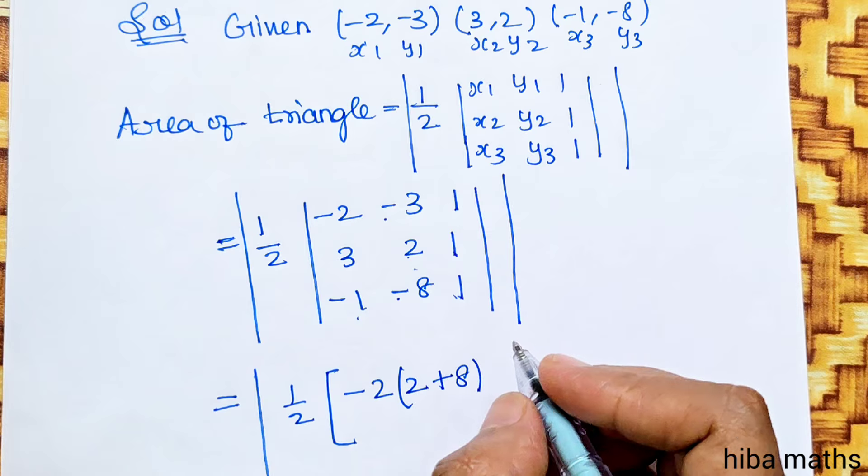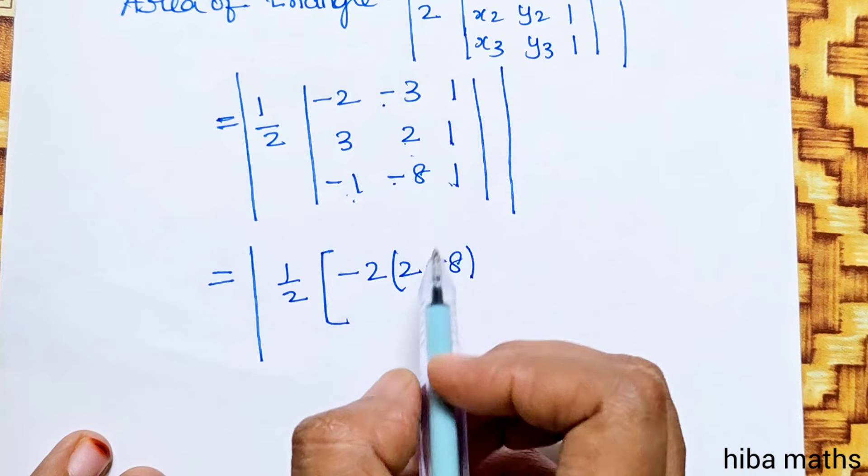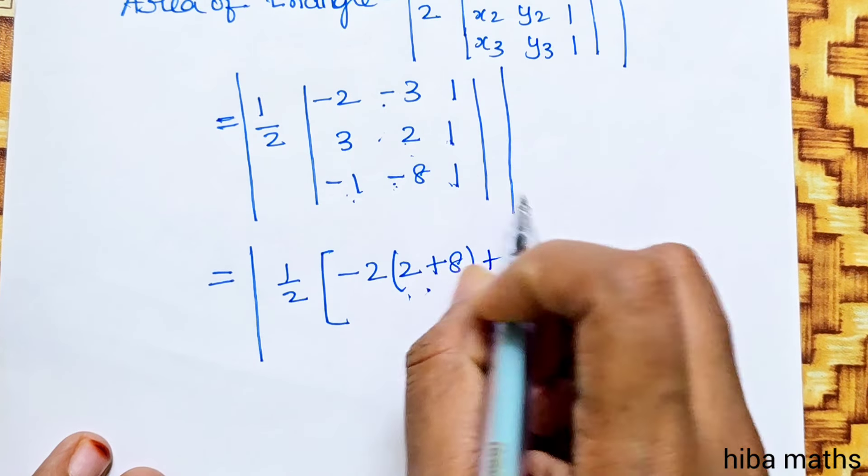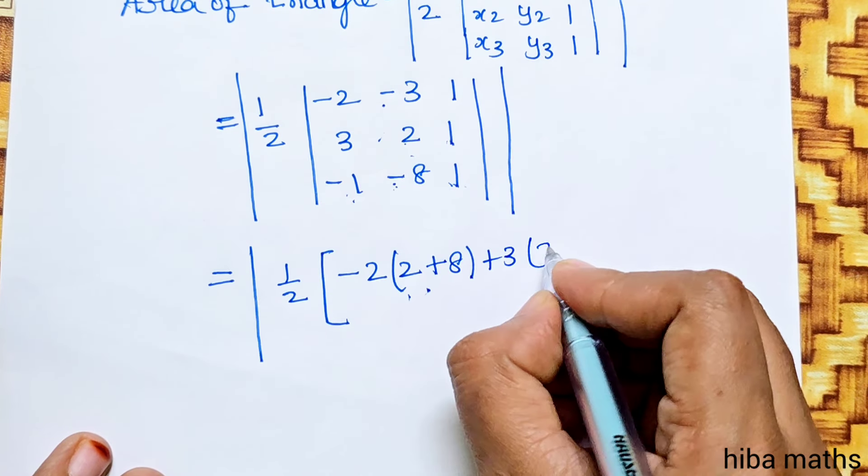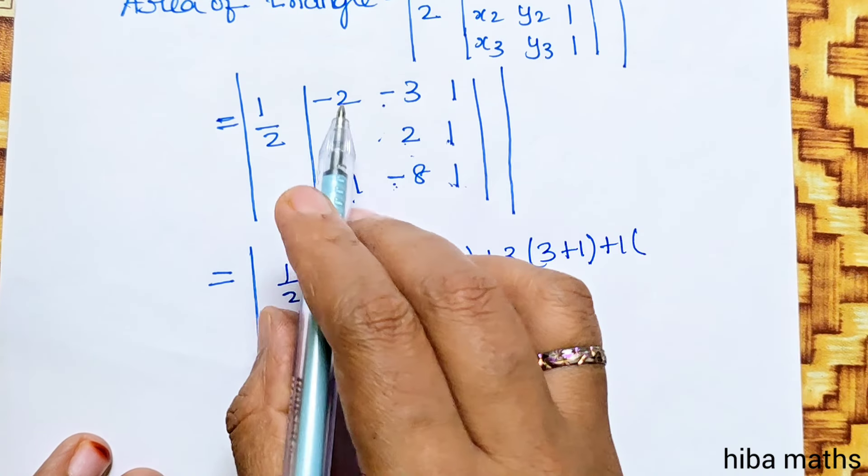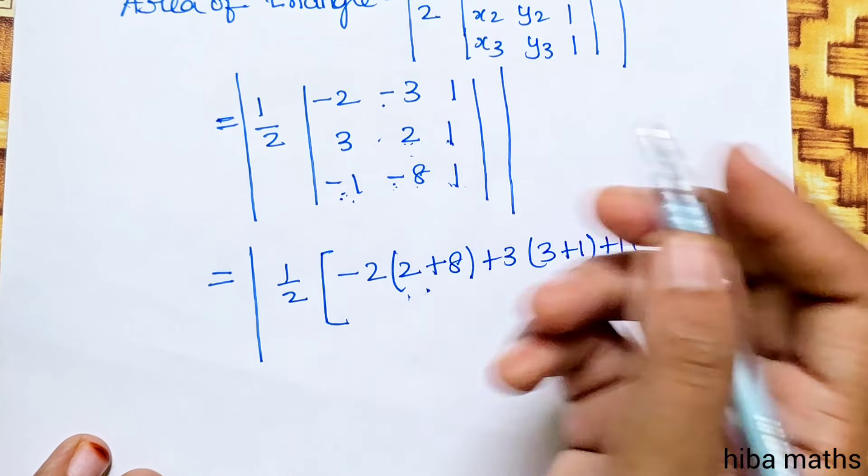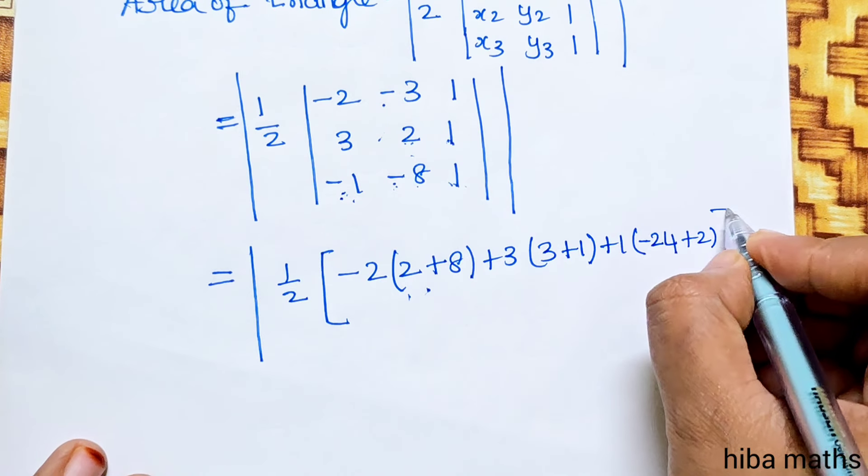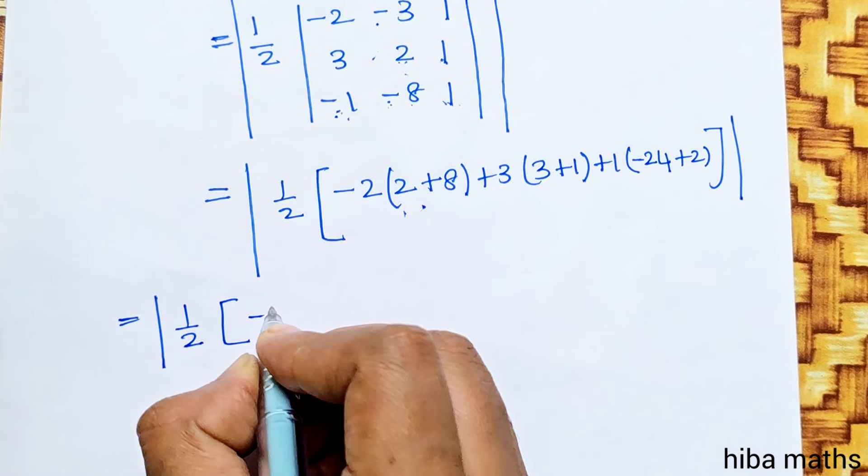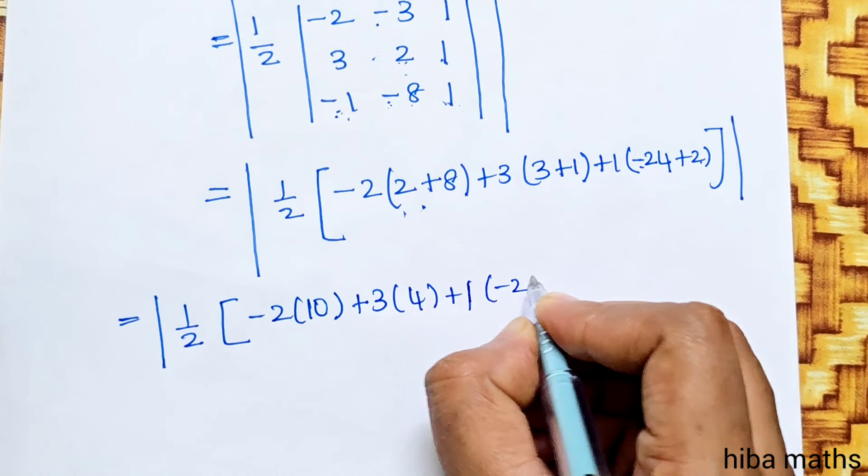Continuing the calculation: equals 1/2 times [-2 times 10 plus 3 times 4 plus 1 times (-24 minus (-2))]. That's 1/2 times [-20 plus 12 plus (-22)]. Simplifying: -20 plus 12 equals -8, then -8 minus 22 equals -30.